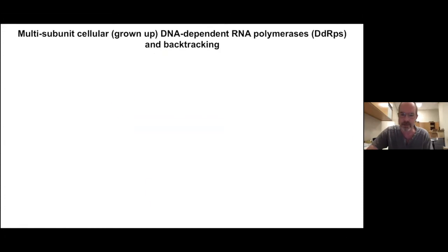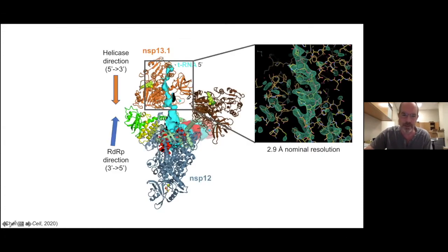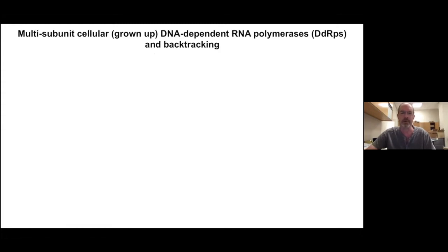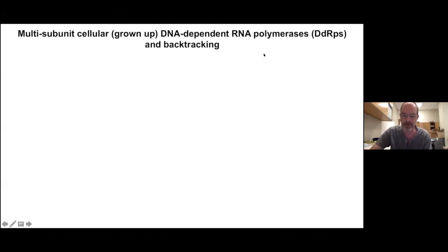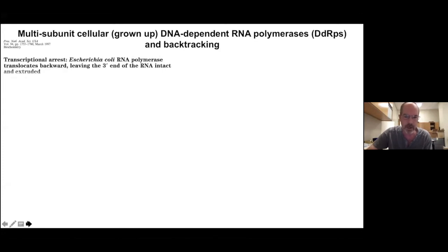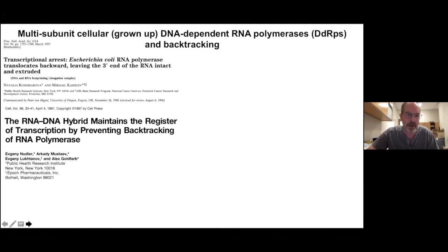If the helicase wins this sort of competition, it could actually push the polymerase backwards. And as Liz mentioned earlier, we work on the cellular DNA-dependent RNA polymerases. And this sort of backwards motion is a very common thing for us to think about. It's called backtracking. And I'd like to talk a little bit about backtracking in the DNA-dependent RNA polymerases before I get into the RNA-dependent RNA polymerase.